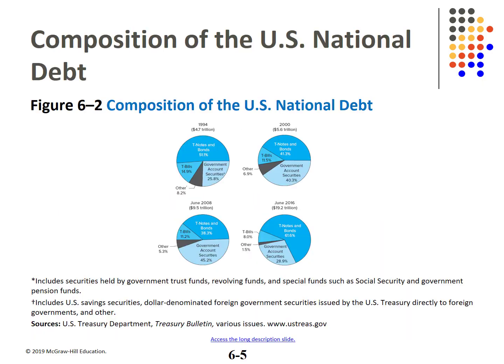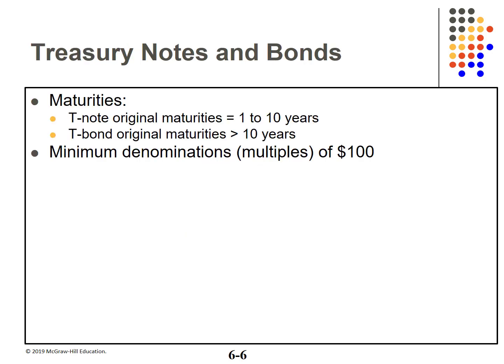These pie charts detail the composition of the national debt from 1994 to 2016. The T-bill share has declined from 14.9% in 1994 to 8% in 2016. Treasury notes and bonds, while declining in 2000 and 2008, rose to 61.6% by 2016. Treasury notes have maturities from 1 to 10 years; Treasury bonds have maturities over 10 years, with the long bond at 30 years. Denominations are typically $1,000, but they're quoted as if par were $100.